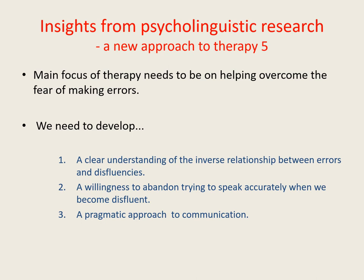To summarize: we produce blocks when the release threshold rises too high. In order to reduce the likelihood of blocking, we need to reduce the height of the release threshold, which means trying less hard to speak problem words clearly and accurately, and instead giving a higher priority to simply maintaining the forward flow of speech. For all of this to be possible we need: first, a clear understanding of the inverse relationship between errors and disfluencies; second, a willingness to abandon trying to speak accurately whenever we become disfluent; and third, an overall pragmatic approach to communication.